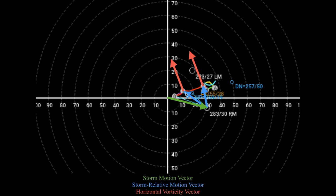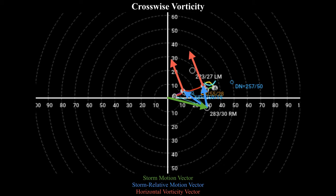This is what we refer to as crosswise vorticity. A purely crosswise vorticity pattern, which is rarely seen in the atmosphere, will have a horizontal vorticity vector pointing 90 degrees to the storm relative motion vector. We don't often see that in the actual atmosphere, but it can happen. So if you've got a component of vorticity pointing 90 degrees to the storm relative motion vector, that means you've got a component of crosswise vorticity.